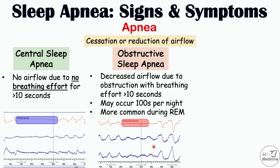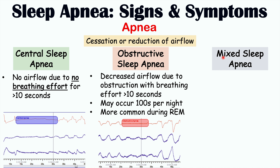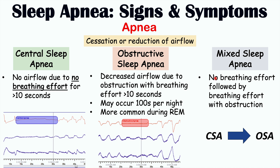Looking at the polysomnography for obstructive sleep apnea, we see no airflow but there is breathing effort present. In mixed sleep apnea, there is essentially a combination of both central sleep apnea and obstructive sleep apnea. What happens is that there is no breathing effort at first, then the patient starts to breathe but has issues with airflow due to an obstruction. So it starts out as central sleep apnea and then transitions to obstructive sleep apnea.